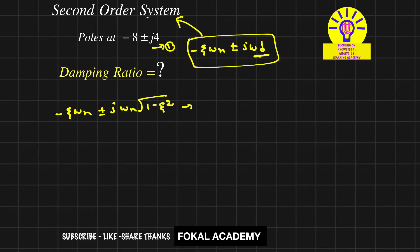By comparing equations 1 and 2, we get ζωn = 8, and ωn√(1-ζ²) = 4. Let's call these equation 3 and equation 4 respectively.